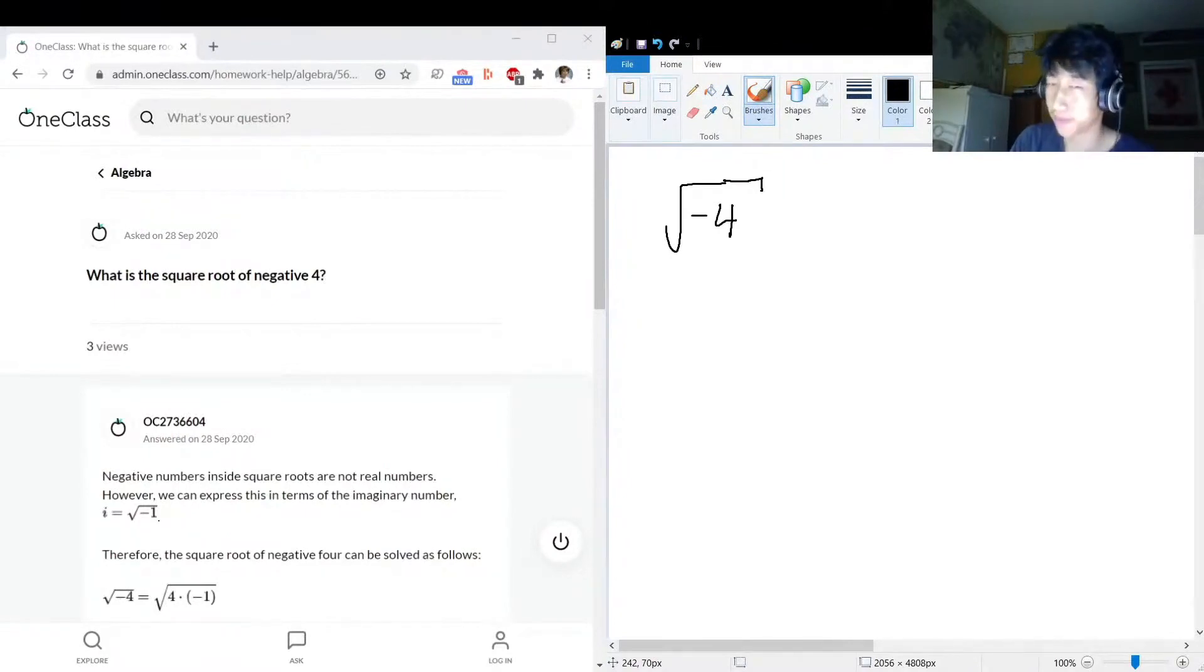I need to tell you about something. We have something called i, which is the imaginary number or the complex number, that is equal to the square root of negative one.